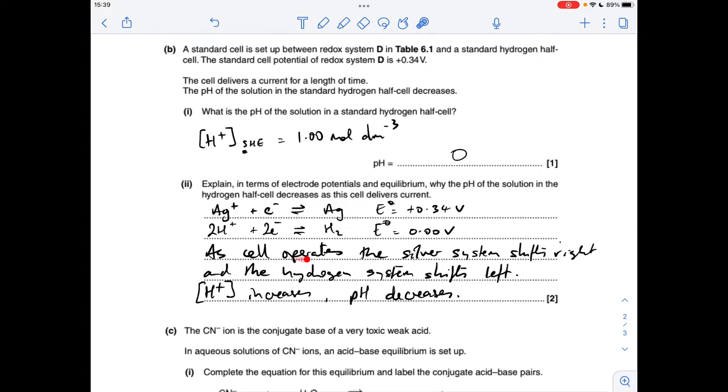So I'm just saying, as the cell operates, the silver system shifts to the right because it's a more positive one. The hydrogen system shifts left because it's a less positive one, so therefore the H plus concentration increases, and as a result, the pH decreases.